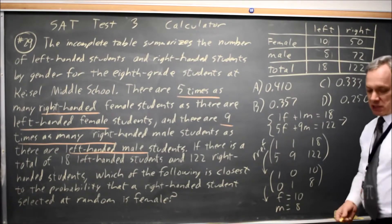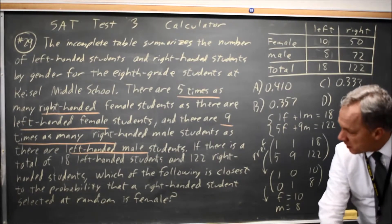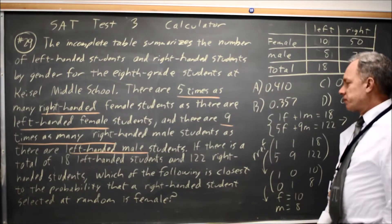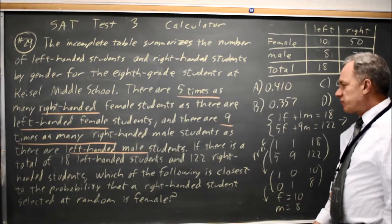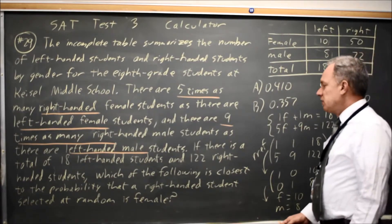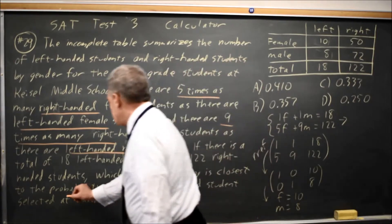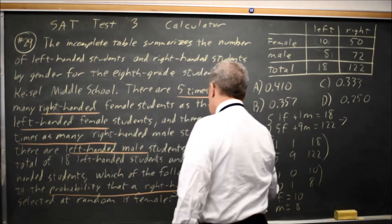But we're not done. Now we need to finish reading the question. The question asks, which of the following is closest to the probability that a right-handed student selected at random is female?